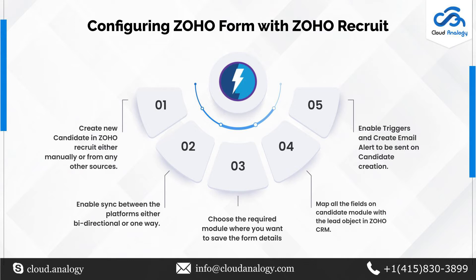Let me now share the process of integrating Zoho Recruit with Zoho CRM. First, we need to create a new candidate in Zoho Recruit either manually or from other sources like Zoho Forms. Whenever a new candidate gets built in Zoho Recruit, that record can be easily converted and added to the lead module. Second, we need to enable sync between the platforms — either bi-directional or one-way — so that whenever a lead gets created we can create a candidate in Zoho Recruit, or whenever a candidate gets created in Zoho Recruit we can easily create a lead in Zoho CRM.